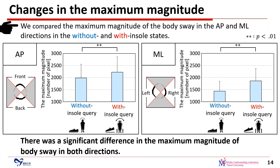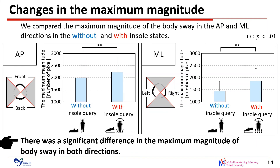We compared the maximum magnitude of body sway in the AP and ML directions in the without and with-insole states. The maximum magnitude is increased with the insole state compared to the without-insole state in the AP direction. Similarly, the maximum magnitude is significantly increased with the insole state compared to the without-insole state in the ML direction. There was a significant difference in the maximum magnitude of body sway in both directions.